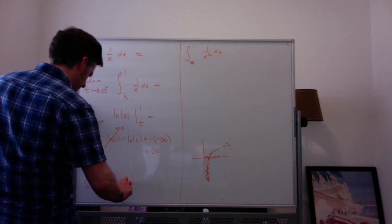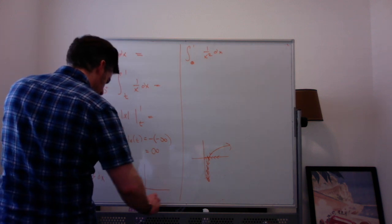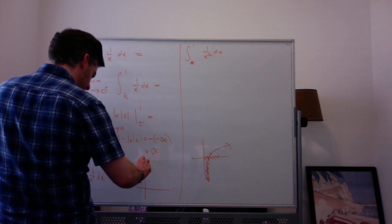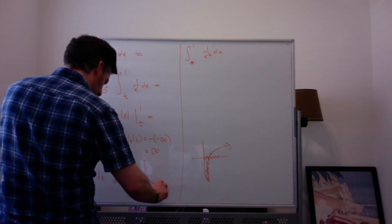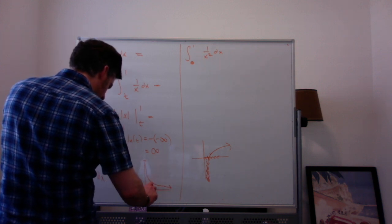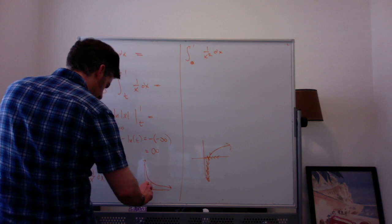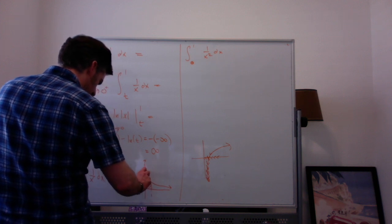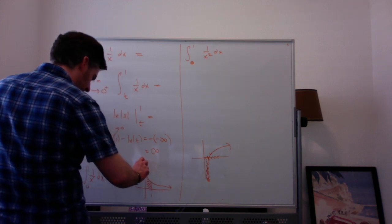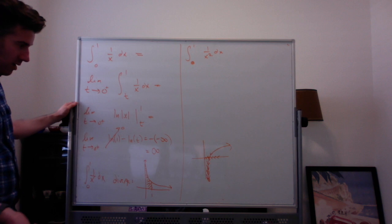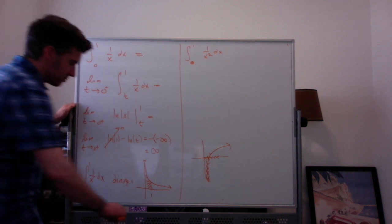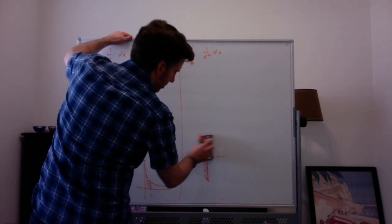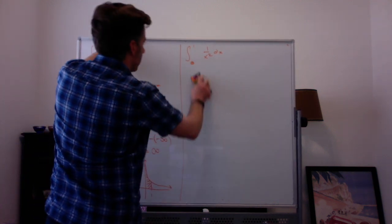If we think about this graphically, if we look at the function 1 over x from 0 to 1, we're saying this area here goes on forever and ever — it's an infinite amount of area. Now let's look at the integral from 0 to 1 of 1 over x squared.